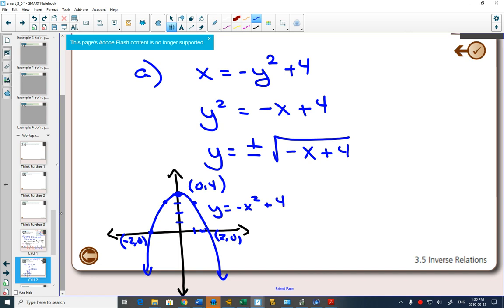Now, to graph the inverse, which I'm going to do in green, we can either try to graph the inverse equation, which is that y equals plus or minus negative x plus 4, or we can say, what do I know about graphs? It's going to flip over the line y equals x, and all my x and y coordinates are going to get switched.